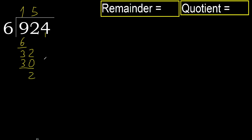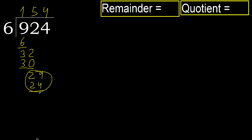Next, bring down: 24. 6 multiplied by 4 is 24, which is not greater. Subtract: 24 minus 24 equals 0.